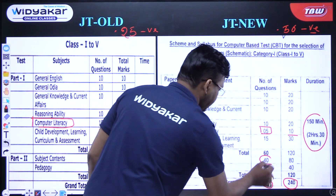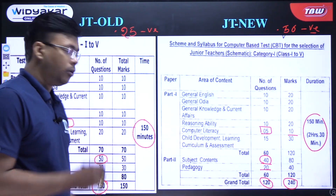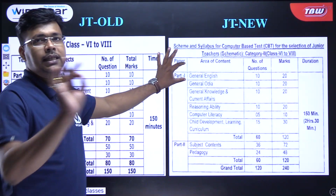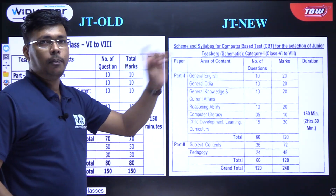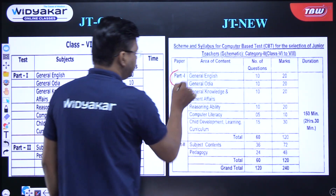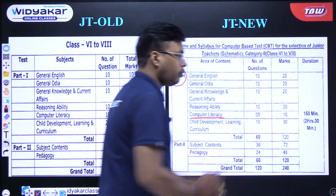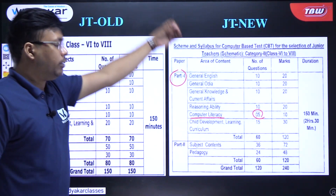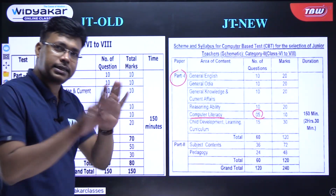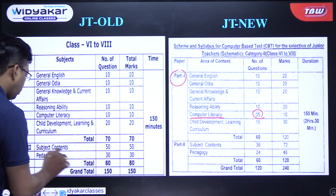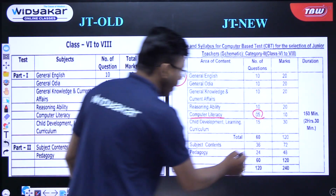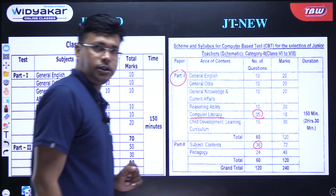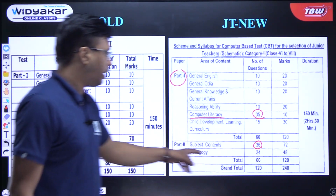So what is our primary? Primary and upper primary part 1 is exactly the same — our new syllabus primary and upper primary part 1 is exactly the same. This is part 2: subject content is 50 marks. This is 36 questions, this is 33 questions, this is 15 questions, this is 24 questions.